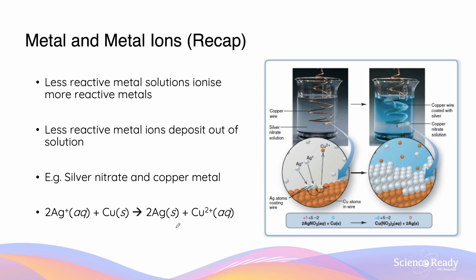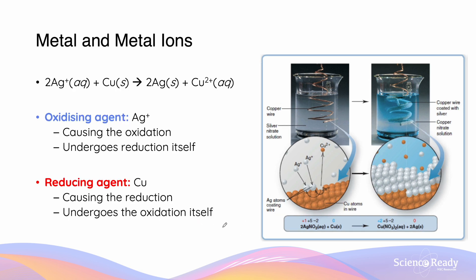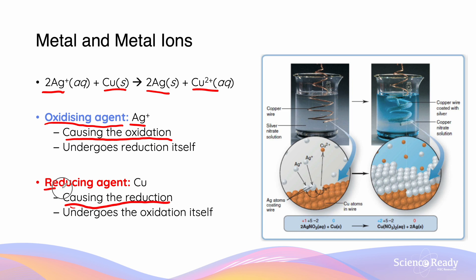Recapping on reactions between metals and metal ions: a less reactive metal solution is going to ionize a more reactive metal, so the less reactive metal will deposit out of solution. For example, silver nitrate and copper metal will cause the silver metal to deposit around the copper wire, while the copper wire goes into solution to form the 2+ ion. In this reaction, the silver ions are being reduced into silver metal, and the copper is being oxidized into copper ions. Because the silver is reduced, it causes the oxidation, so silver is called the oxidizing agent or oxidant. Since copper undergoes oxidation, it causes the reduction, so it is called the reducing agent or reductant.